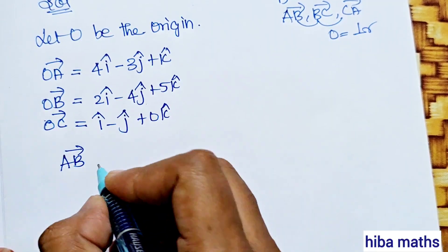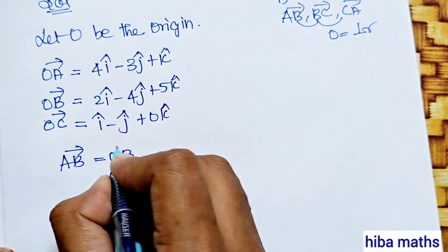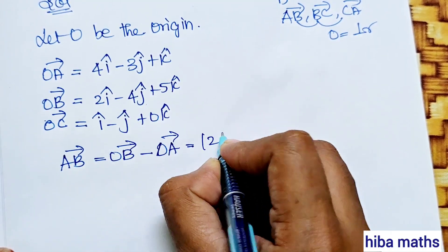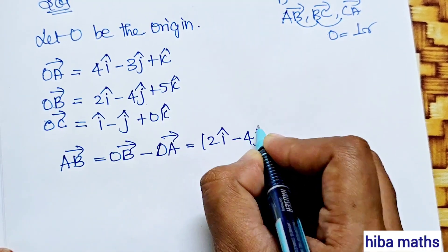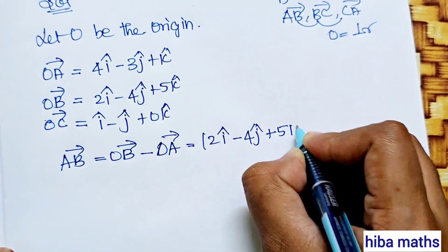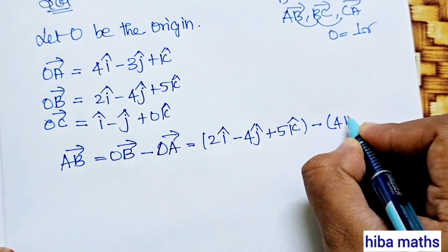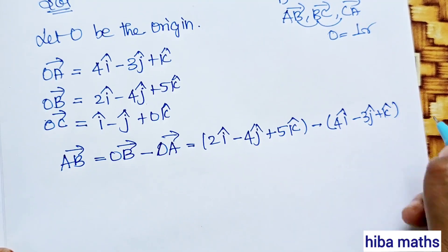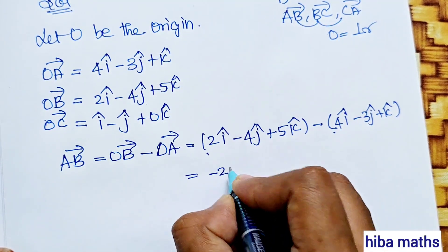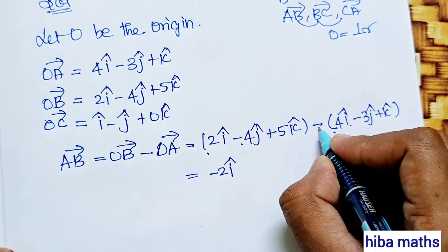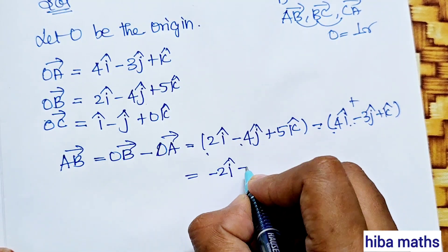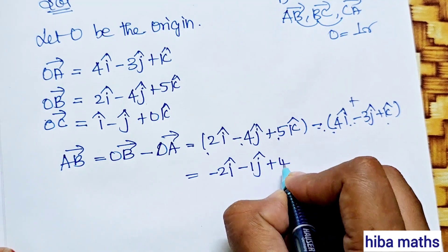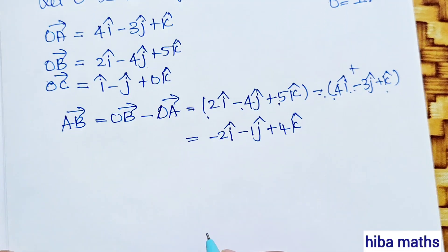AB vector = OB vector - OA vector. That is (2i - 4j + 5k) - (4i - 3j + k) = (2-4)i + (-4+3)j + (5-1)k = -2i - j + 4k. This is the AB vector.